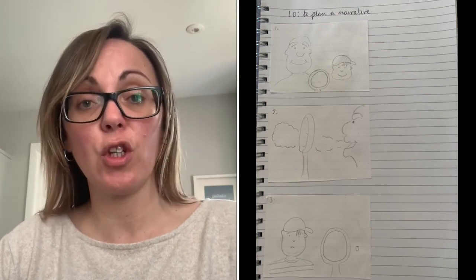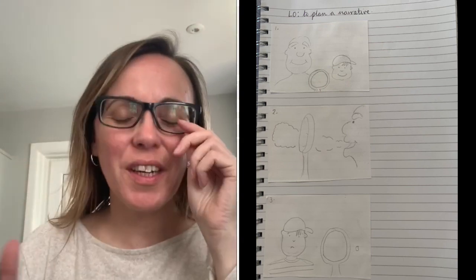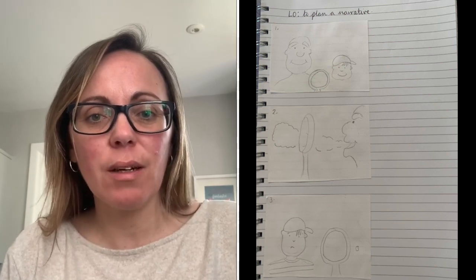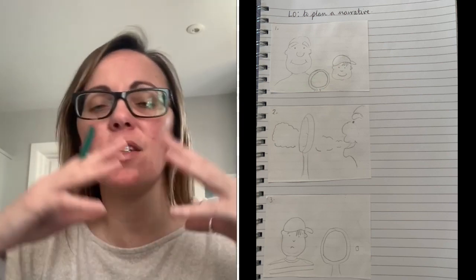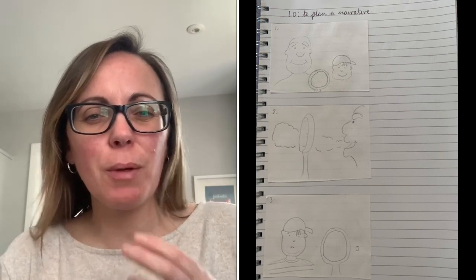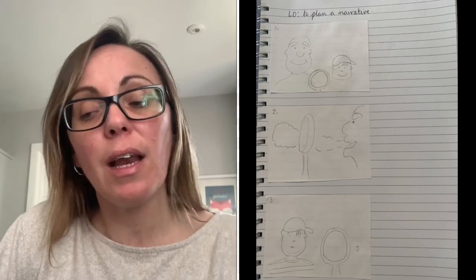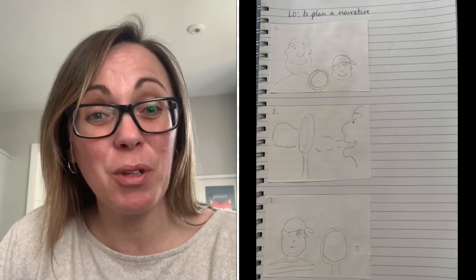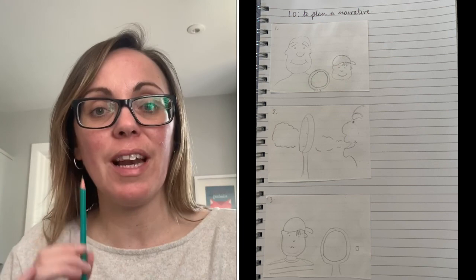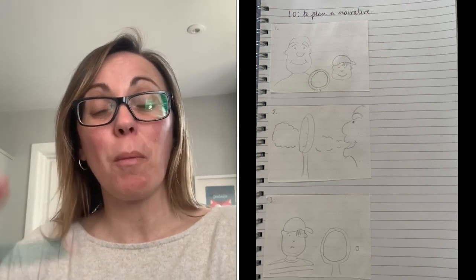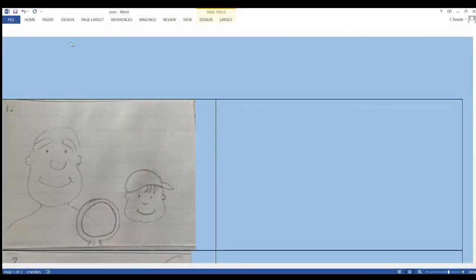As you can see, I've written my ELO at the top, which is 'to plan a narrative,' because that's what we're doing today. I've stuck my pictures down the left-hand side of my book, which means I've got plenty of space next to each one to write my ideas. Each picture shows a part of the story, and I want you to write your own sentence next to each picture.